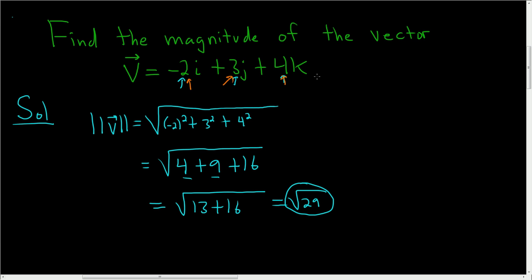The formula in general, if you have a vector, let's call it v, and that's equal to, say, ABC, then the magnitude of that vector is the square root of a squared plus b squared plus c squared. So in this case, this can be written as negative 2, 3, and 4. And so that's your a, that's your b, and that's your c. I hope this helps.